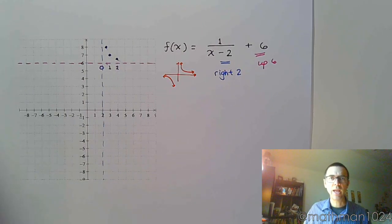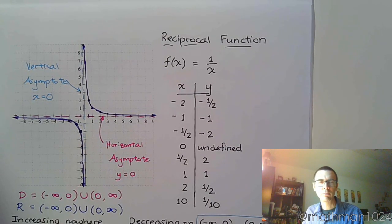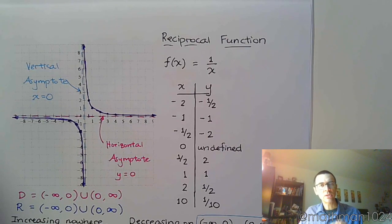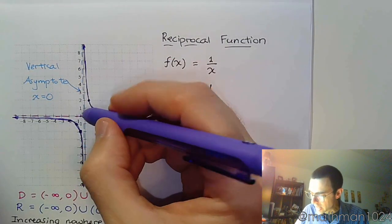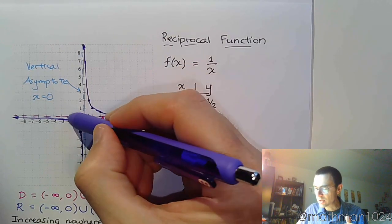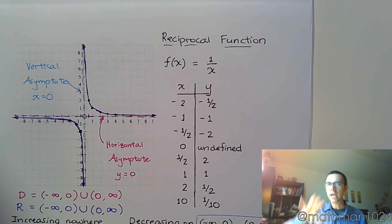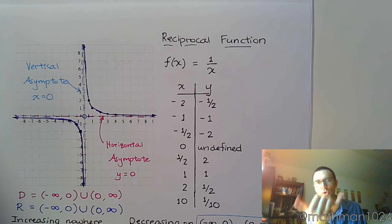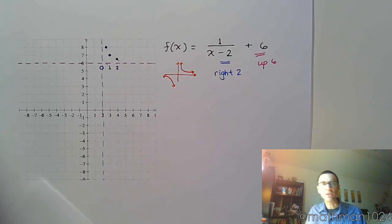Now let's look back at the original picture for our reciprocal function. There is some symmetry here — symmetry about a point, that point being the origin. So as I go over 2 and up 1/2, if I reverse I go left 2 and down 1/2 to get another point. Having point symmetry means you can take your graph, rotate it 180 degrees, and it would still line up exactly. That helps us get additional points.